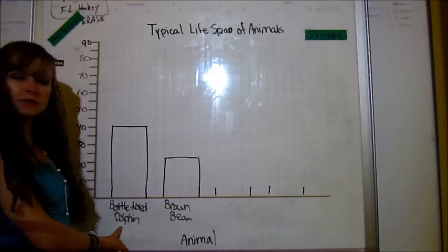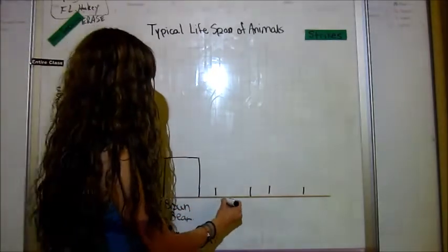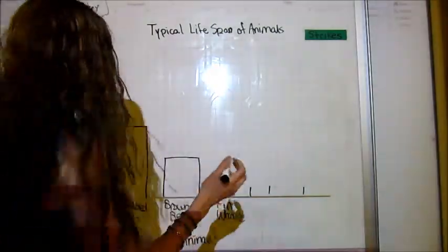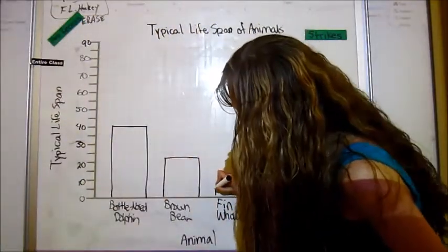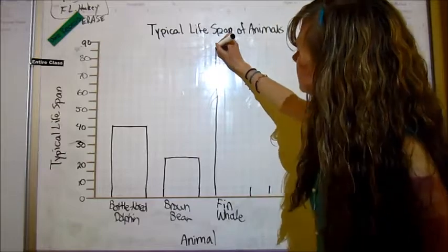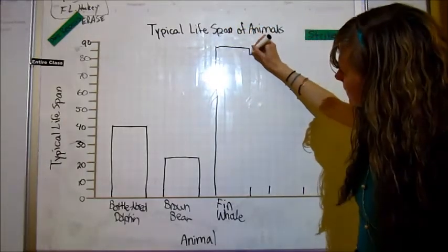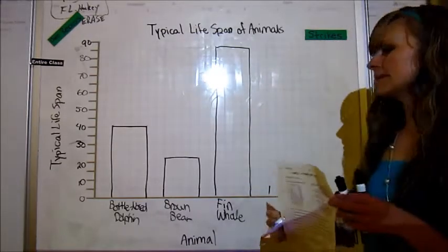So we've got bottlenose dolphin. We've got brown bear. Next up, we want the fin whale. And a fin whale can live, that's the 85 years. So we want to go all the way up and we follow exactly to 85 years. We make it the same thickness. Come all the way down and there's the fin whale.